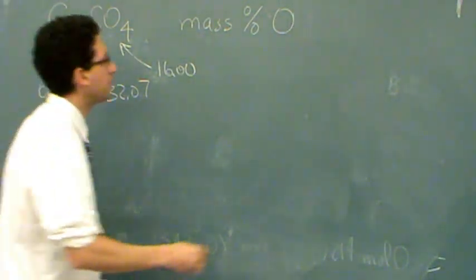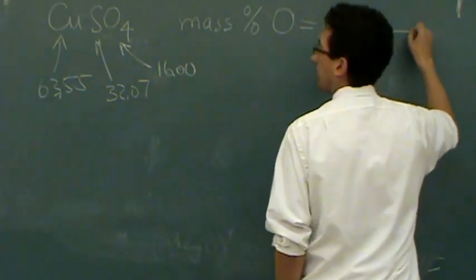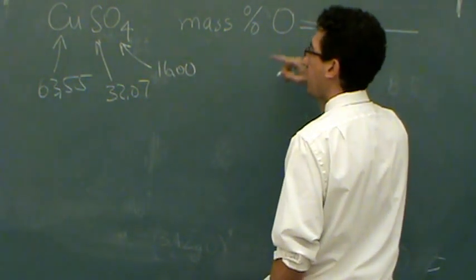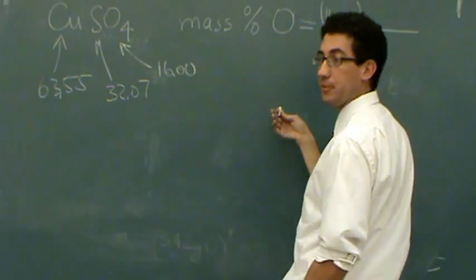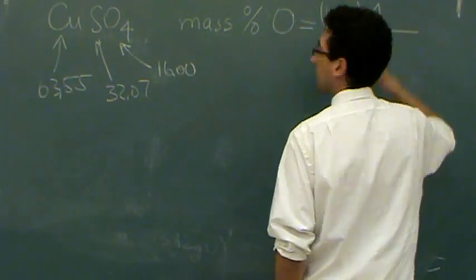So the percent mass of oxygen is going to be the mass of oxygen, which is 16. But notice there's four of them in the molecule, so I have to account for all four, times four.